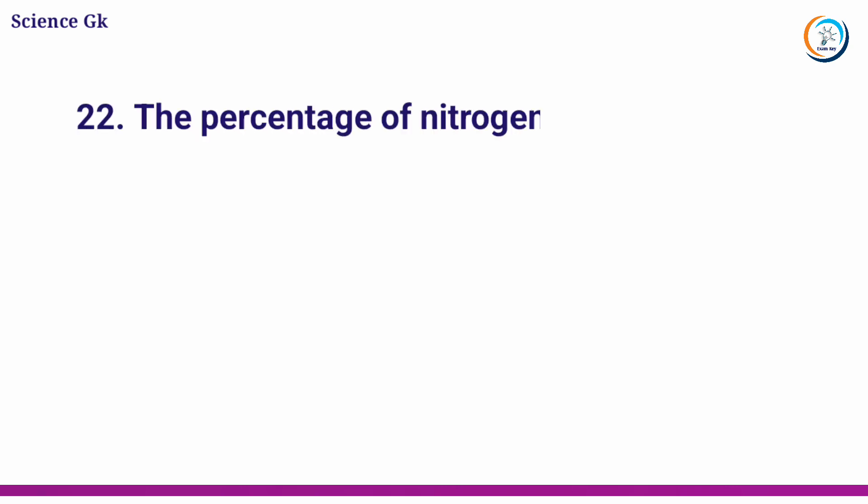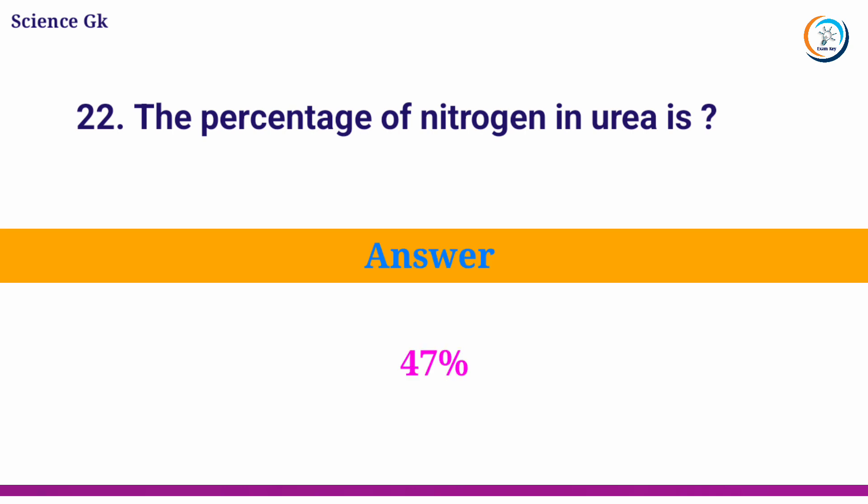The percentage of nitrogen in urea is? Answer: 47%.